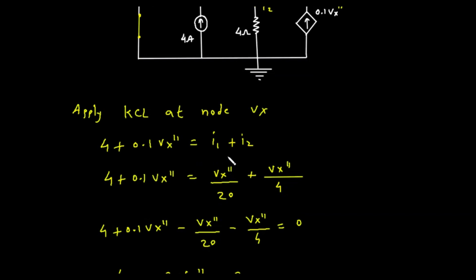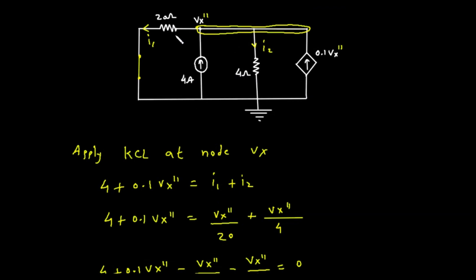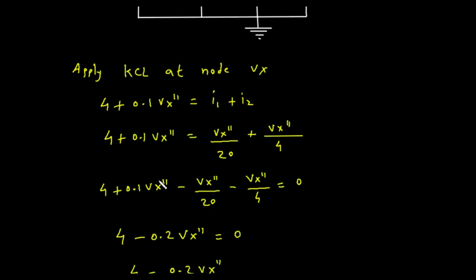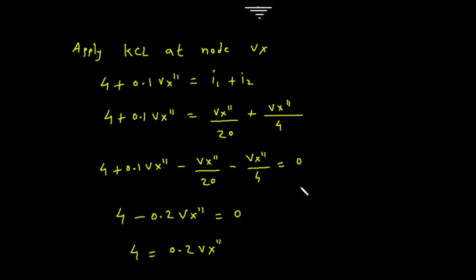Now let's express I1 and I2 in terms of Vx double prime. The current I1 is the voltage Vx double prime divided by the resistance, shown as Vx double prime divided by 2. The current I2 is Vx double prime divided by 4. So the equation becomes: 4 plus 0.1 Vx double prime equals Vx double prime divided by 2, plus Vx double prime divided by 4. Let's rearrange by moving all terms with Vx double prime to one side: 4 plus 0.1 Vx double prime, minus Vx double prime divided by 2, minus Vx double prime divided by 4, equals 0.